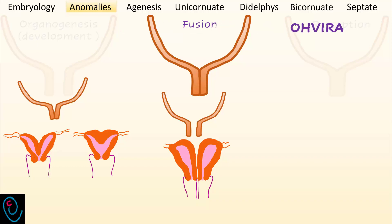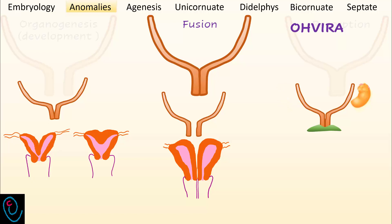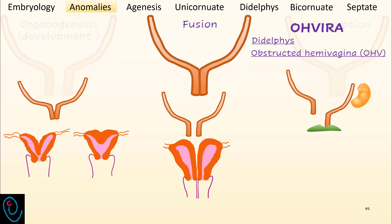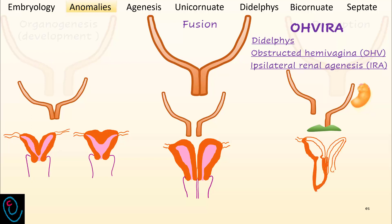OHVIRA is a variant of uterine didelphys. Normally, Müllerian ducts fuse together and open in the urogenital sinus, and two kidneys develop beside the Müllerian ducts. In OHVIRA, one kidney is absent. The Müllerian duct on the same side is displaced laterally and cannot fuse with the contralateral duct, resulting in a didelphys uterus. It also does not open in the urogenital sinus, leading to an obstructed hemivagina. The triad of didelphys, obstructed hemivagina, and ipsilateral renal agenesis is known as OHVIRA.